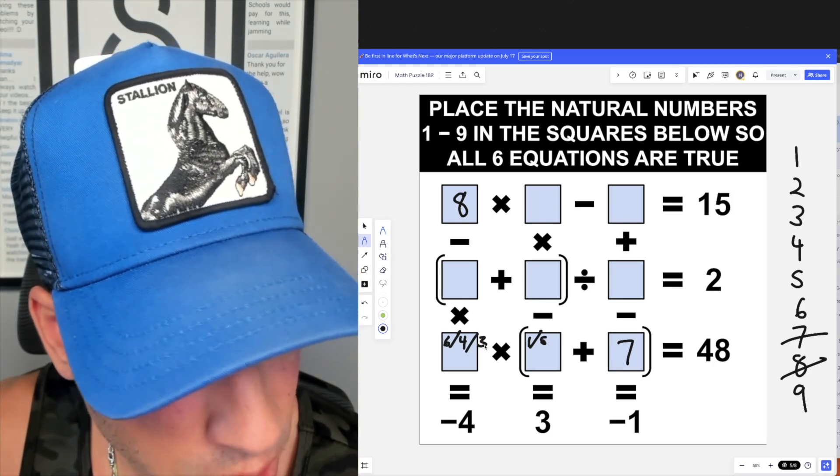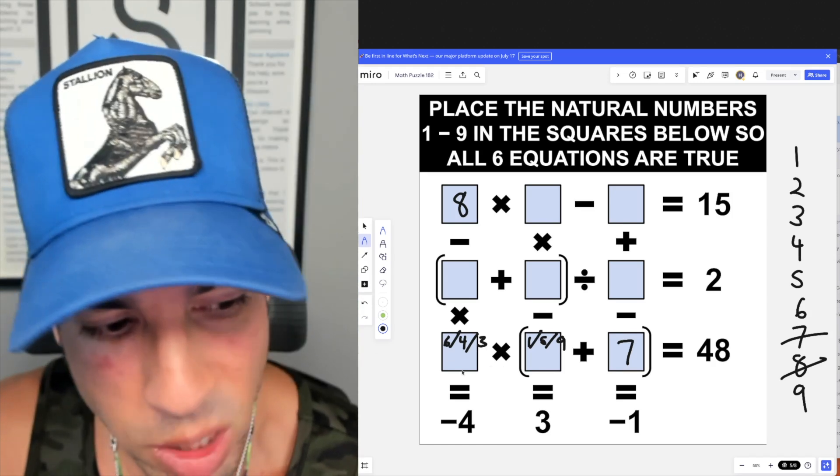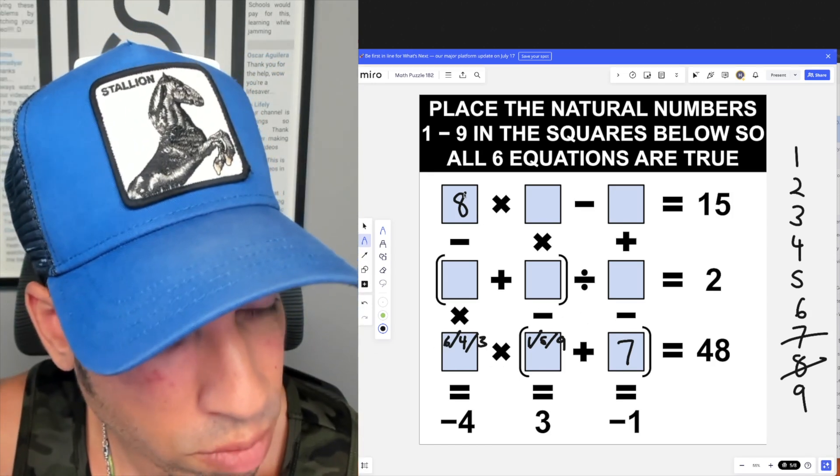Last but not least, we could have three here and then we'd have a nine on the inside, because nine plus seven is 16 times three is 48. Those are our only options. So right here if I have six, four, and three, and I'm looking at this equation, we want to get negative four.